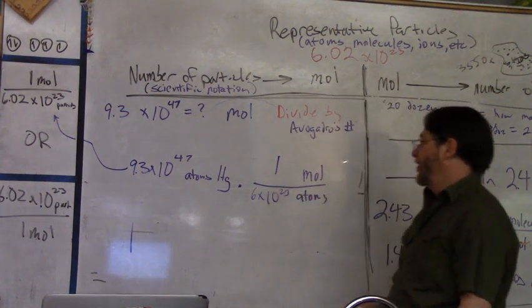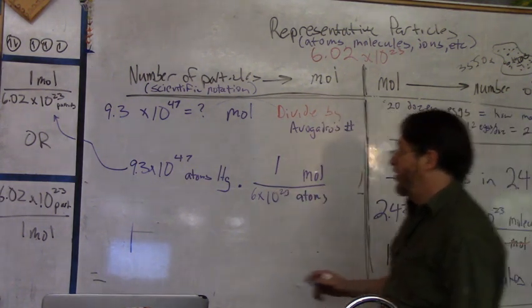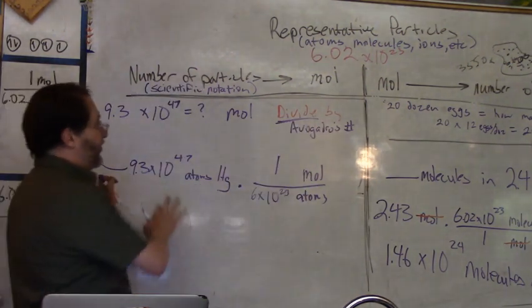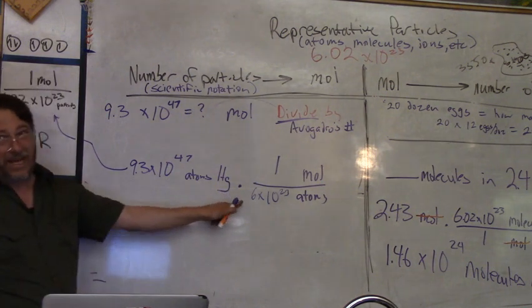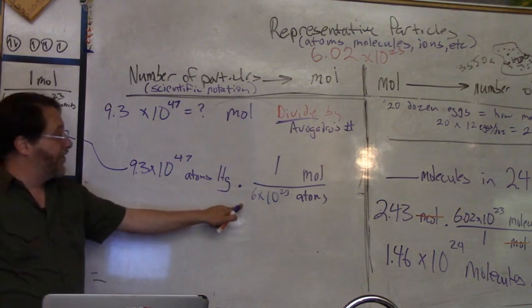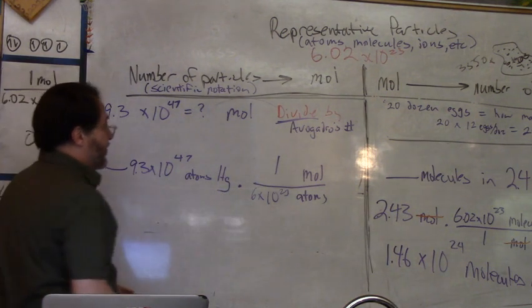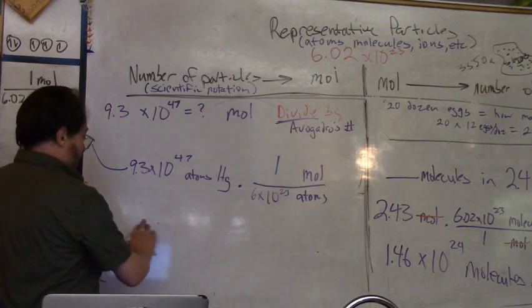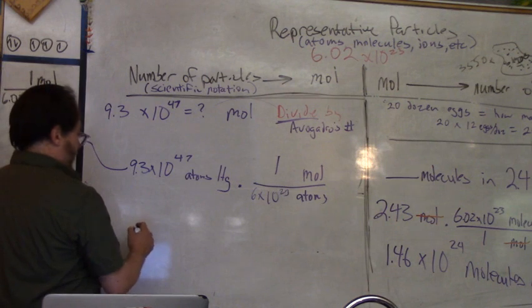6.02 times 10 to the 23rd atoms. So that puts you in a situation where you divide by Avogadro's number. That's all this system is here to help you do. If you don't know how to figure out the logic, you're going to want to do this conversion factor label method.